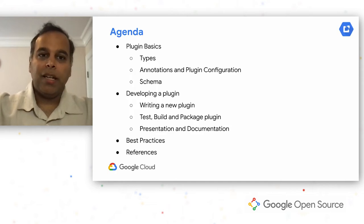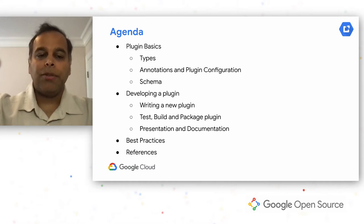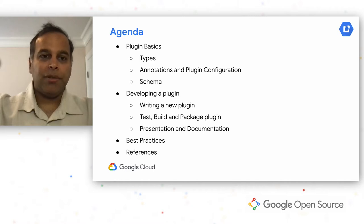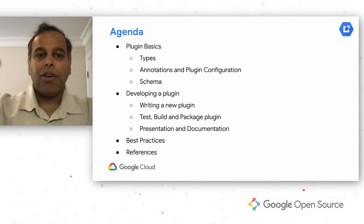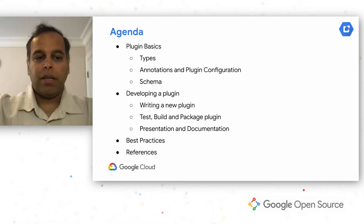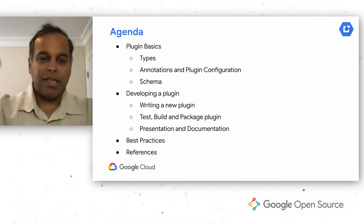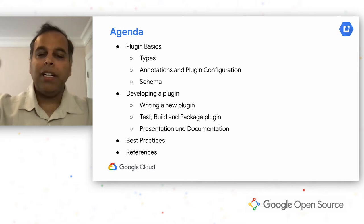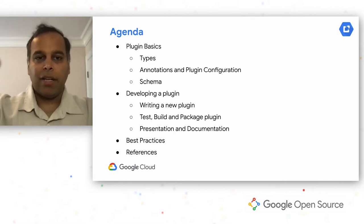What we will talk about today: we'll talk about what plugins are, what are the different types of plugins that CDAP supports. We'll talk about how to understand annotations on plugins and what schemas and records are. Then Prashant will walk you through how to develop plugins — how to write plugin code, how to test, build, and package a plugin. He'll talk about how the UI looks, what documentation to care about, best practices from other developers contributing to our open source GitHub repo, and references at the end.